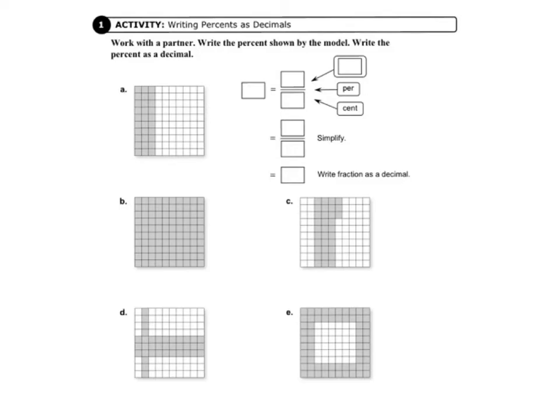So on letter A, we see that 30% of the squares are colored in, are shaded. So as a fraction, that looks like 30 over 100. So that's 30 percent. And when we simplify that, that becomes 3 tenths. And if we write that fraction as a decimal, we should know that that's 0.3.